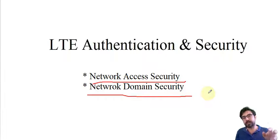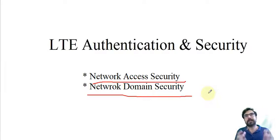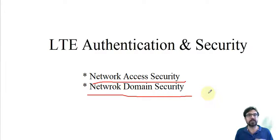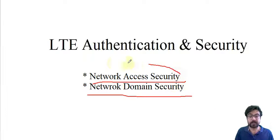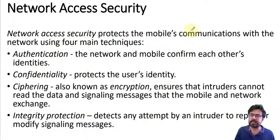The other part is network domain security — it means within the network, the components located inside, for example communication between P-Gateway and S-Gateway. The interfaces inside the network can be locked or fenced by the admin, so ordinary people cannot access them. Since the air interface is the vulnerable part, we're going to concentrate on that — ciphering and encryption.